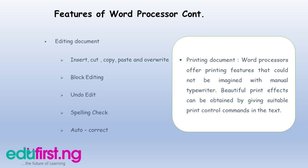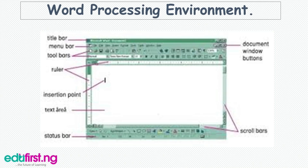The word processing environment is what you see when you open a word document. It includes the title bar, menu bar, toolbars, rulers, insertion point, text area, status bar, scroll bar, and the document window buttons.